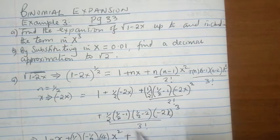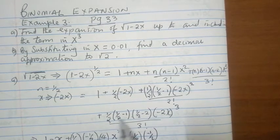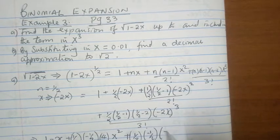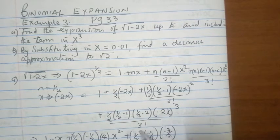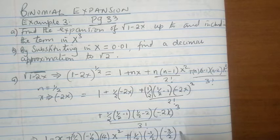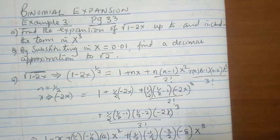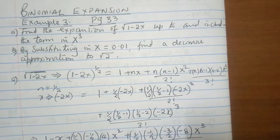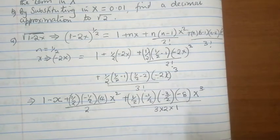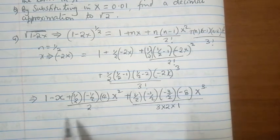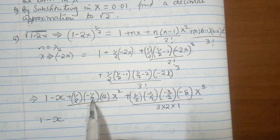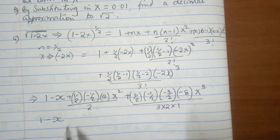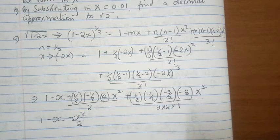And the next term: a half times minus a half, because of n minus 1, and a half minus 2 becomes minus 3 over 2, which is negative 1 and a half. And of course, minus 2 cubed becomes minus 8. Then we have x cubed over 3 factorial, meaning 3 times 2 times 1. Now cleaning up: 1 minus x; a half times minus a half is minus a quarter, times 4 is minus 1, times x squared becomes minus x squared over 2.